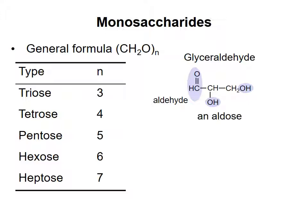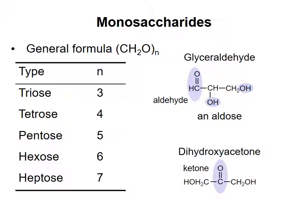In the other triose, dihydroxyacetone, the doubly bonded oxygen is attached to an internal carbon to make a ketone group. Such a monosaccharide is called a ketose.